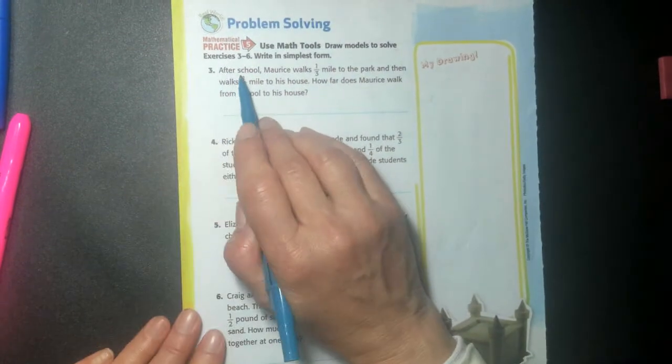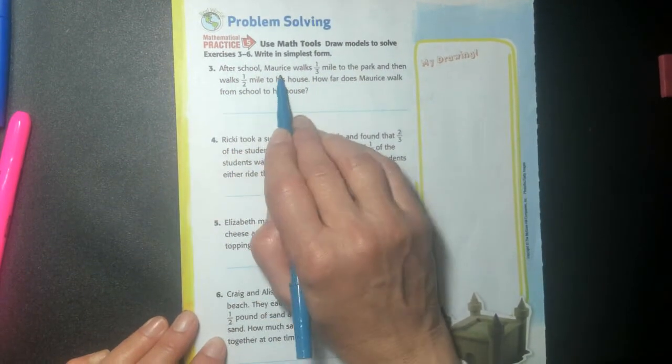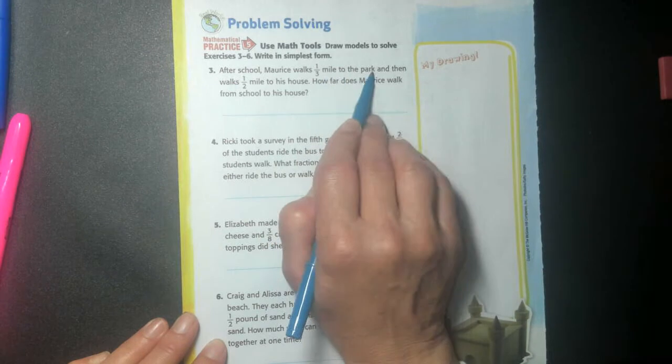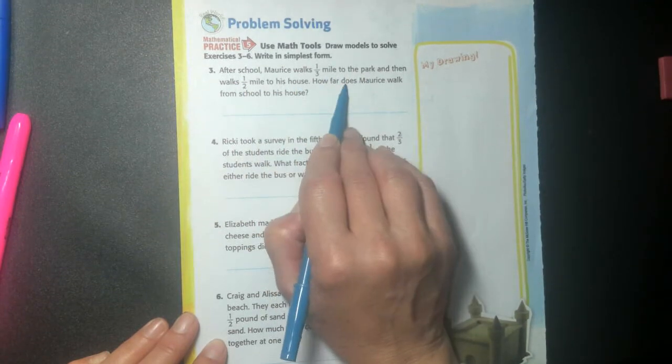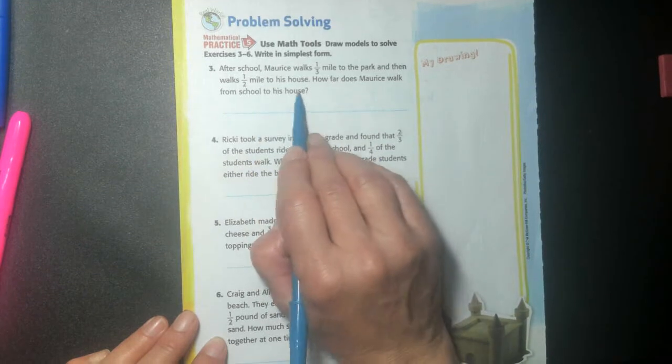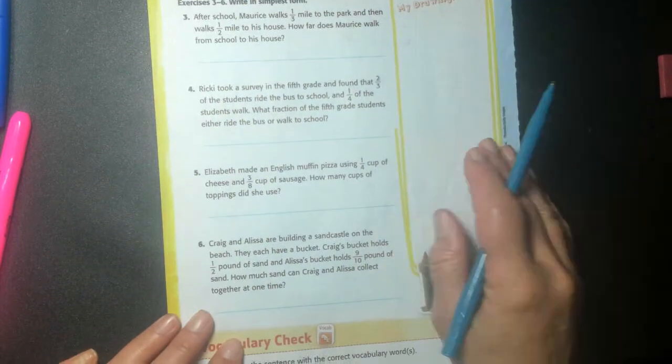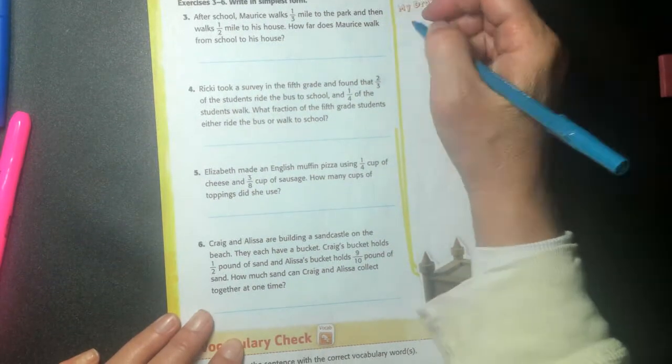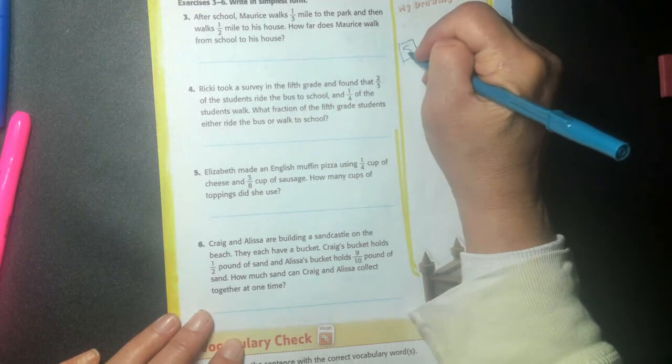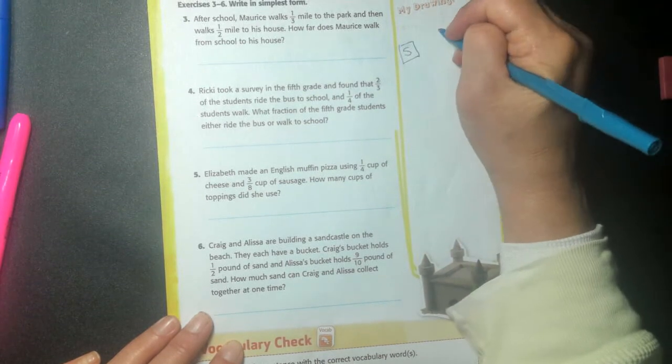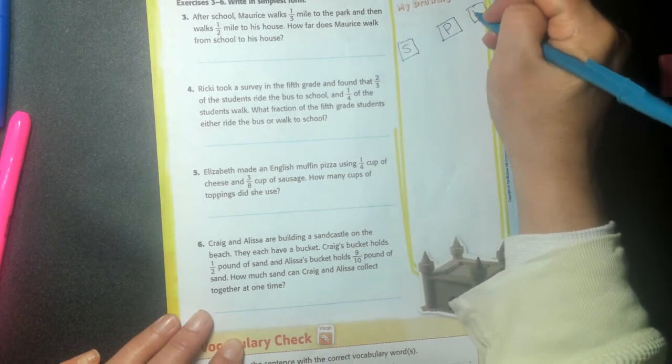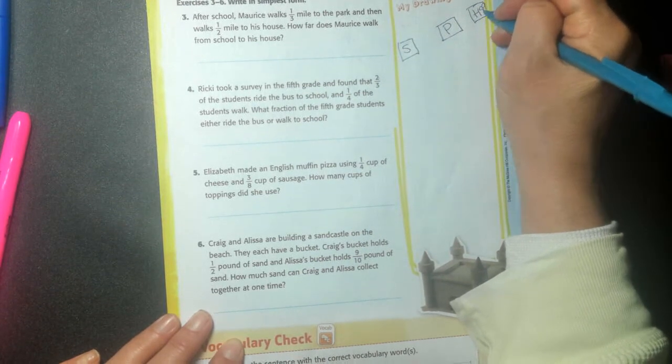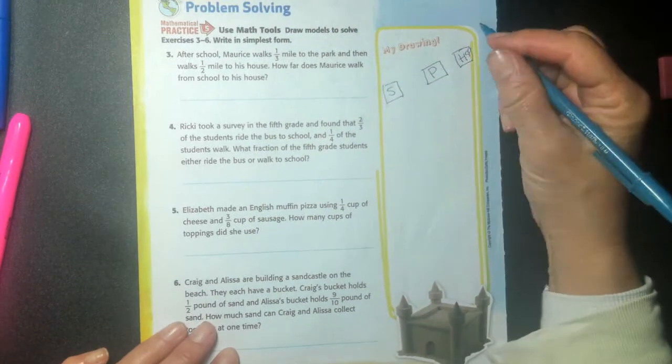Almost done. After school, Maurice walks one third mile to the park and then walks half a mile to his house. How far does Maurice walk from school to his house? So he's going from his school and he's going to go to his park and then his house is right over here. Put a little heart for his house. He loves his house.